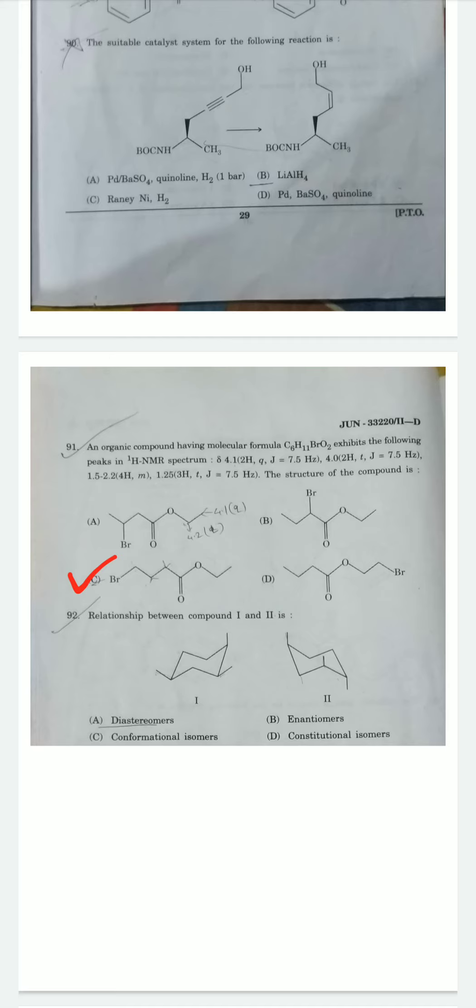Question 15: Relationship between compound 1 and compound 2. These two are diastereomers. They are not enantiomers because they are not non-superimposable mirror images. They are not conformational isomers or constitutional isomers. Therefore option A is correct.